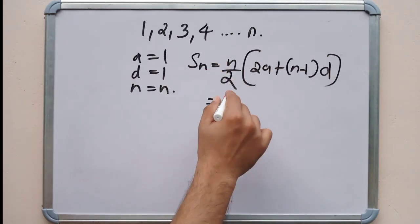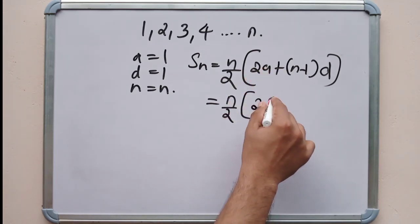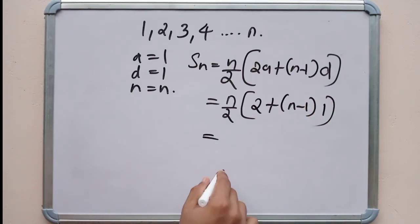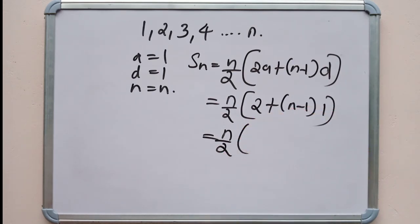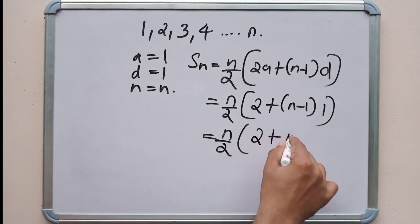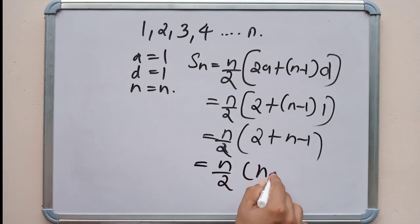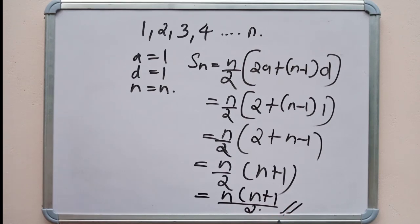Using the formula with A equals 1 and D equals 1: Sn equals N by 2 into (2 plus (N minus 1)) equals N by 2 into (N plus 1), which equals N into (N plus 1) divided by 2. This is the sum of first N natural numbers.